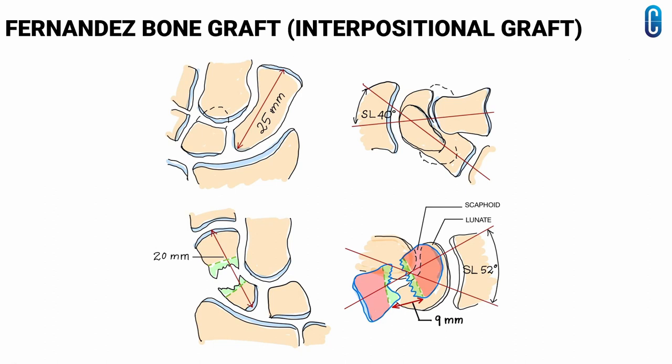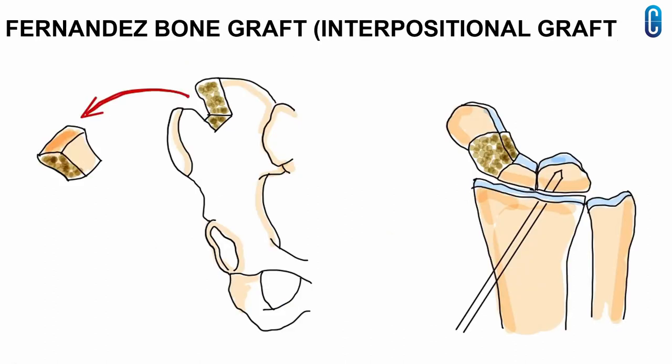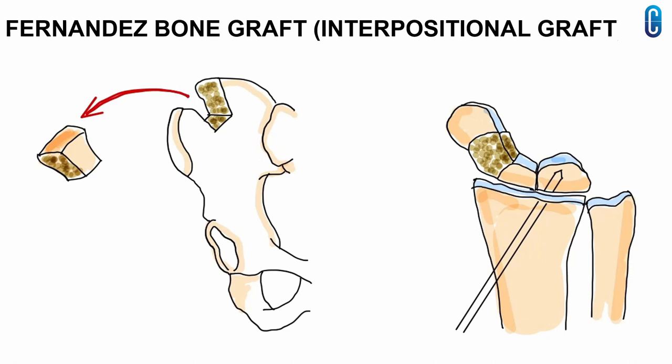The figure shows pre-operative planning for the procedure. The uninjured wrist is traced and the scaphoid length and scaphoid-lunate angle are measured. Based on this information, the size of bone to be resected from the affected side and the form of the graft are calculated. A tricortical iliac crest graft is harvested. The radiolunate joint is pinned and the graft is placed in position, temporarily fixed with K-wires before definitive fixation with a Herbert screw. The final figure confirms that scaphoid length and scaphoid-lunate angle are restored.